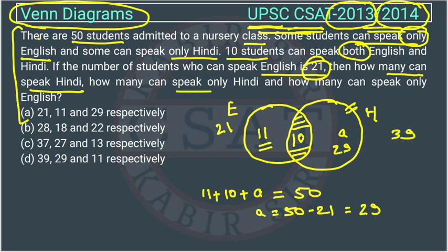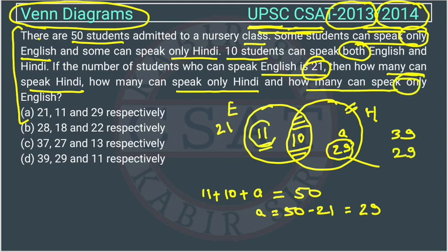How many can speak only Hindi? That is 29. And how many can speak only English? Only English is 11. So the answer is option D.